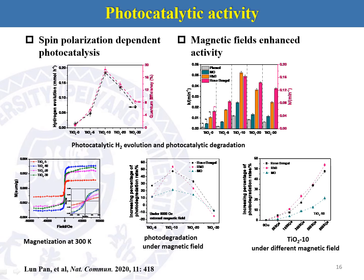Therefore, we finally found spin polarization-dependent photocatalysis, and the sample TiO2 with the highest spin polarization shows the best photocatalysis. Interestingly, the metal-defected TiO2 also shows magnetic field-dependent activity — external magnetic fields can increase the photoactivity, especially for the best sample, TiO2-10.